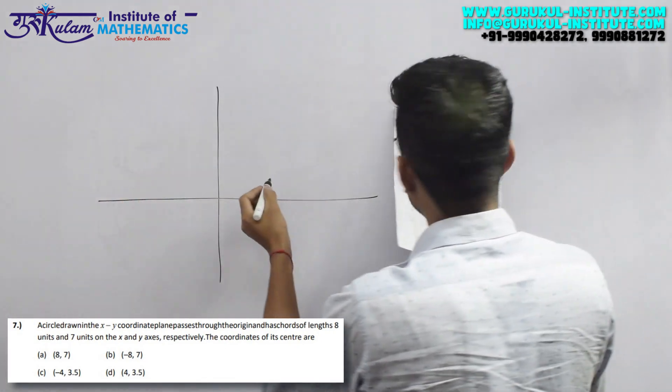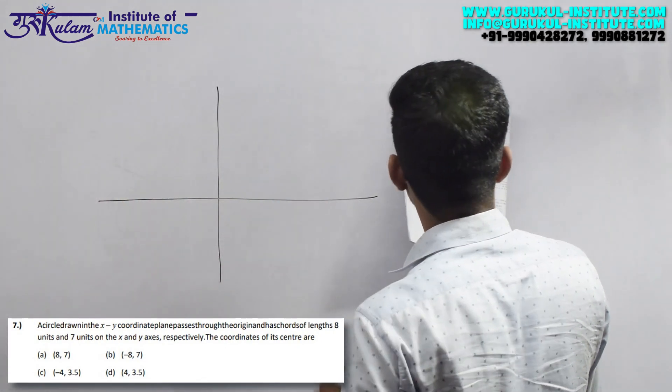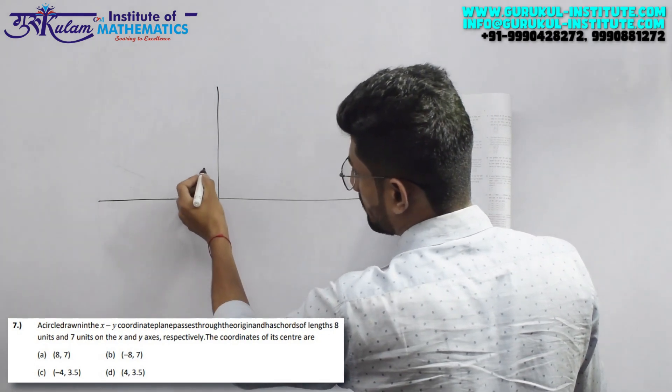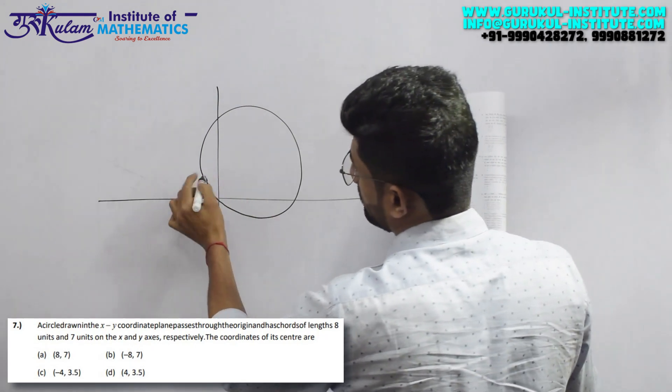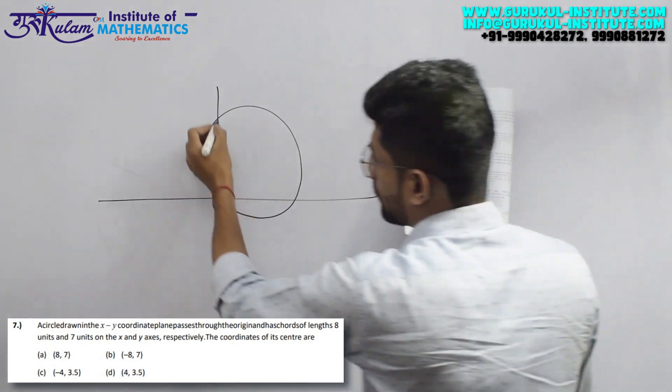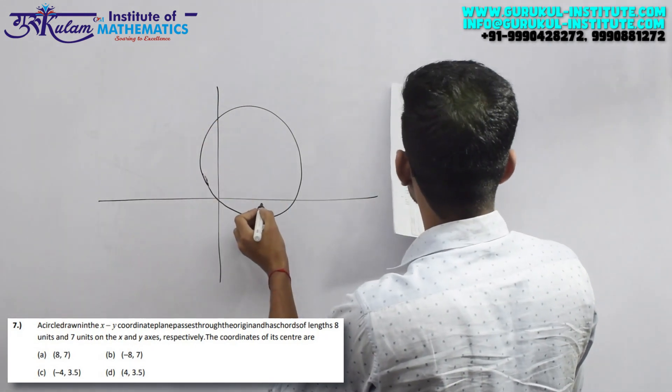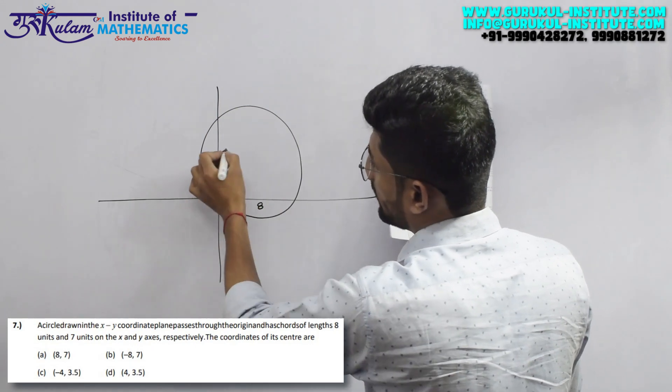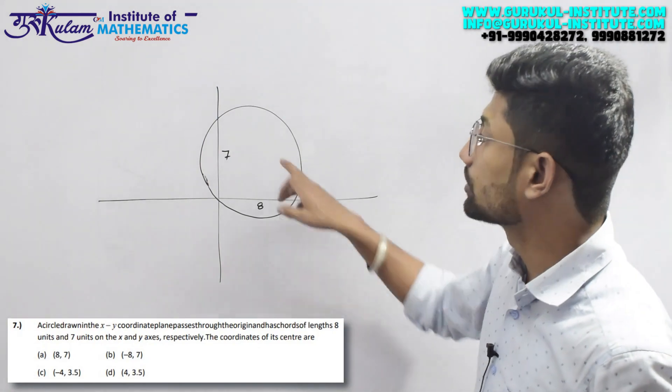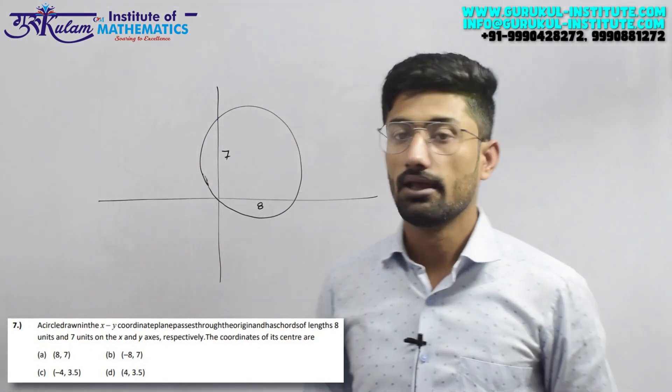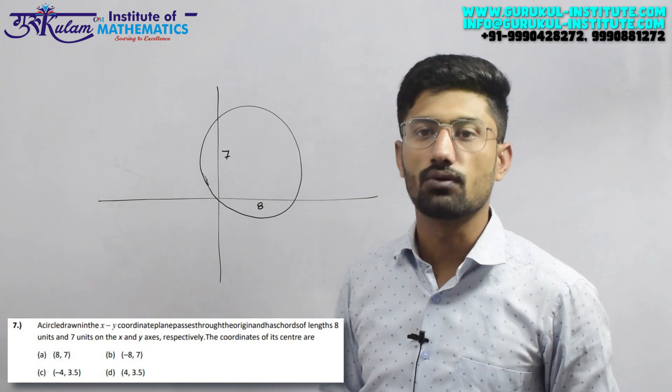The circle passes through and the chord length on the X axis is 8 and the Y axis is 7, basically. This is what's being said, and the center is in some quadrant.